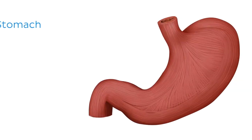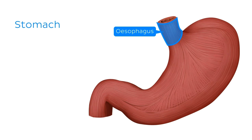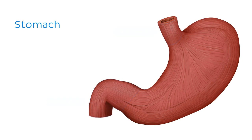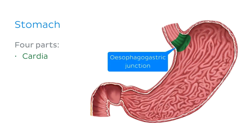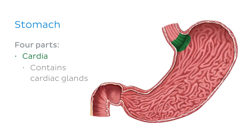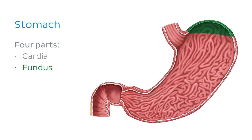The stomach is effectively a distended pouch of the gastrointestinal tract, located distal to the esophagus and proximal to the duodenum of the small intestine. The stomach itself can be divided into four parts. The cardia is located around the esophagogastric junction and is defined by the presence of specialised cardiac glands, which we'll learn more about in just a few moments. The fundus is the area above the esophageal opening and makes up the upper curvature, which is in contact with the diaphragm.